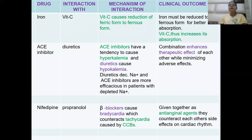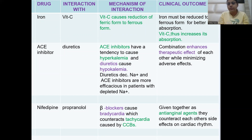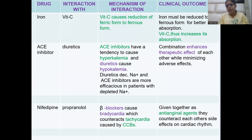Iron and Vitamin C: Vitamin C causes the reduction of ferric iron to ferrous iron. The ferrous form of iron is required for better absorption from the stomach and intestine, so Vitamin C increases iron absorption by this reduction.